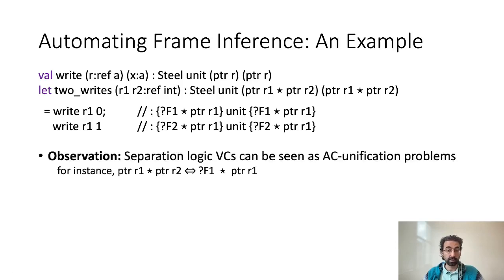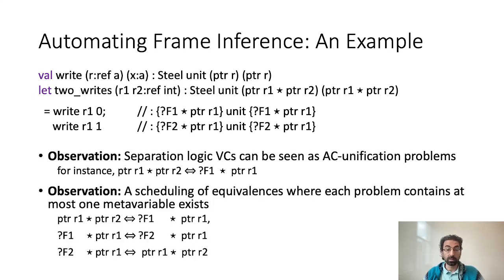Our observation is that separation logic verification conditions can be seen as associative commutative unification problems. For instance, solving the VC 'pointer R1 star pointer R2 is equivalent to F1 star pointer R1' corresponds to finding a unification solution for F1 while allowing AC rewritings on the star. The second observation is that we can always solve the equivalences in an order such that each problem contains at most one frame metavariable. One way to do so is by simulating a forward symbolic execution. Starting from the top of the program, we solve F1 in the first program point, then F2 in the second, F1 having been solved just before, and we finally reach a problem where no frame metavariable remains.